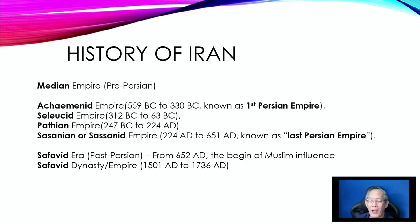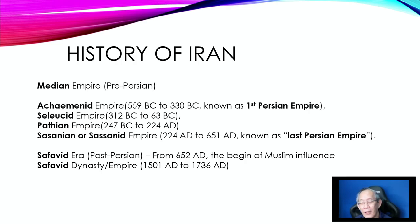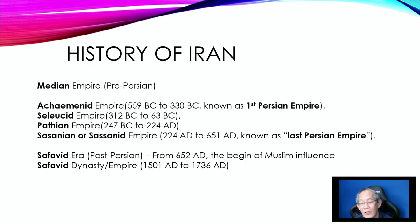The Achaemenid Empire was started in 559 BC to 330 BC, and was known as the first Persian Empire. Then we move on to two concurrent empires, the Seleucid Empire as well as the Parthian Empire. They are slightly overlapped and going concurrently, meaning this piece of land was ruled by two empires. Then finally, they were ruled by the Sassanid Empire, which lasted from 224 AD to 651 AD.